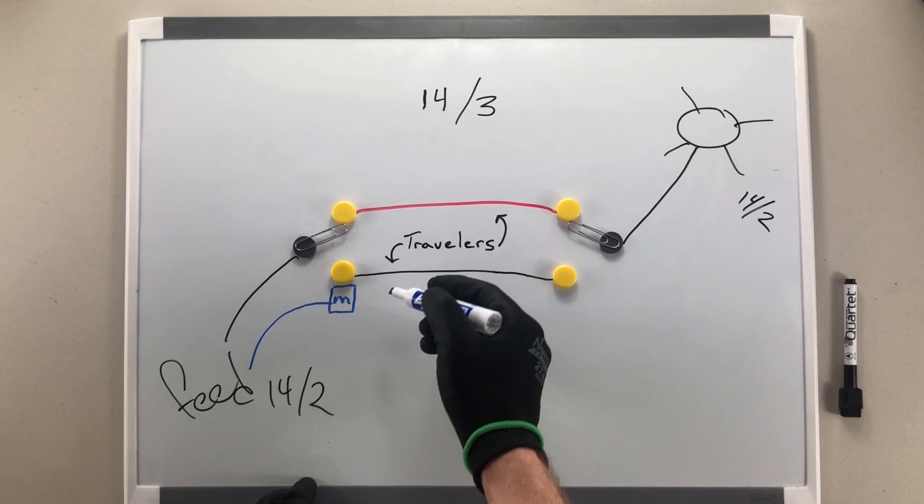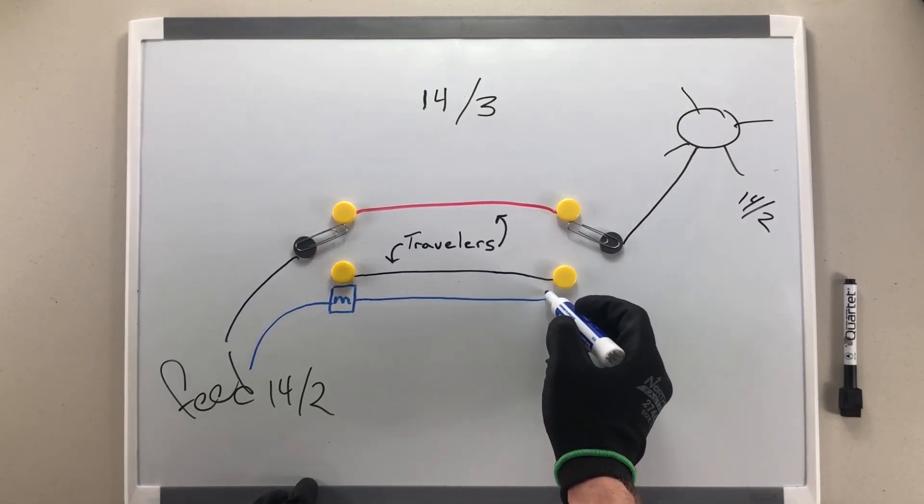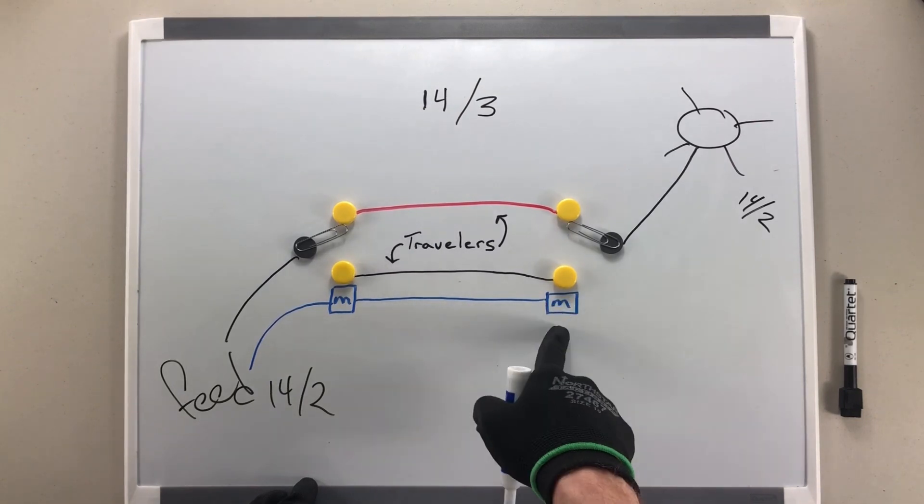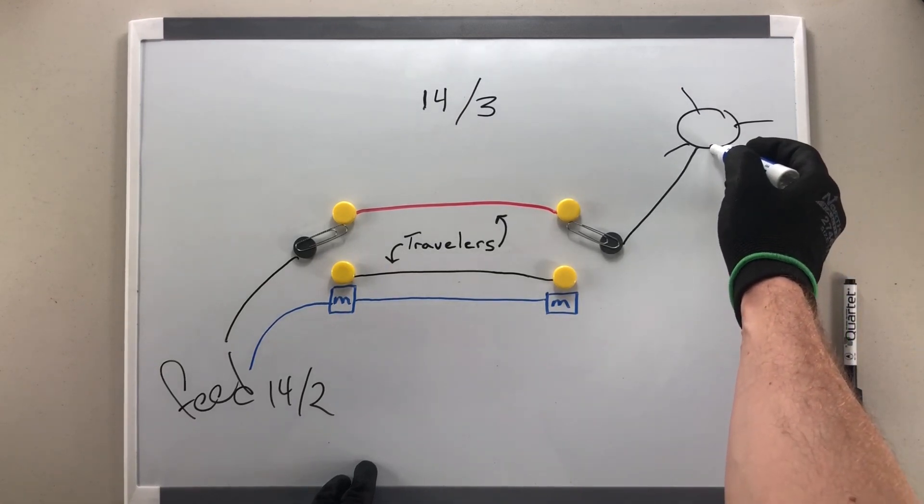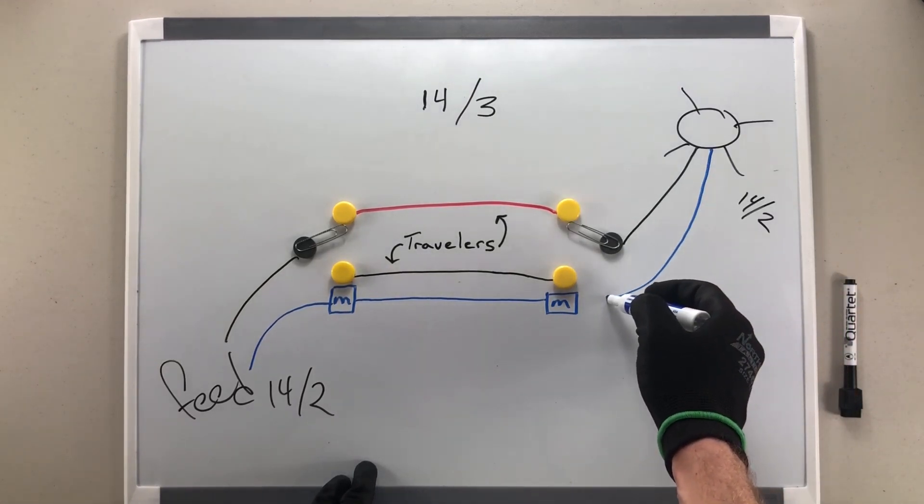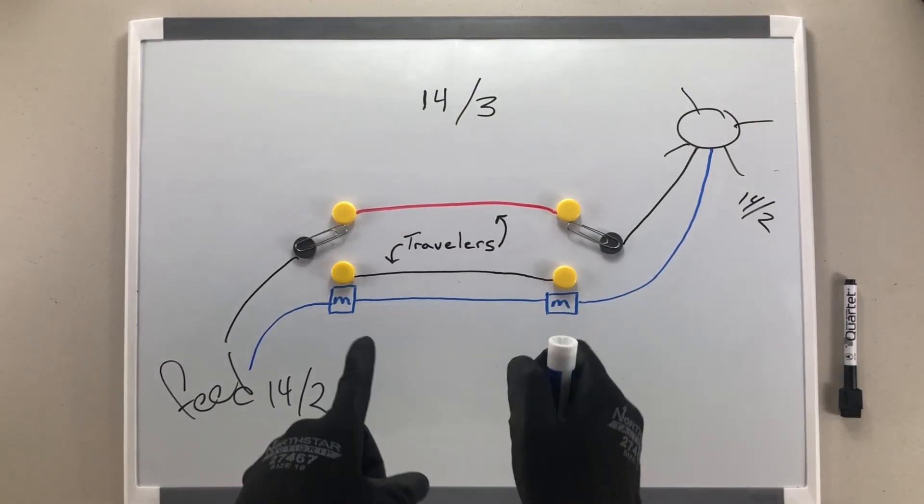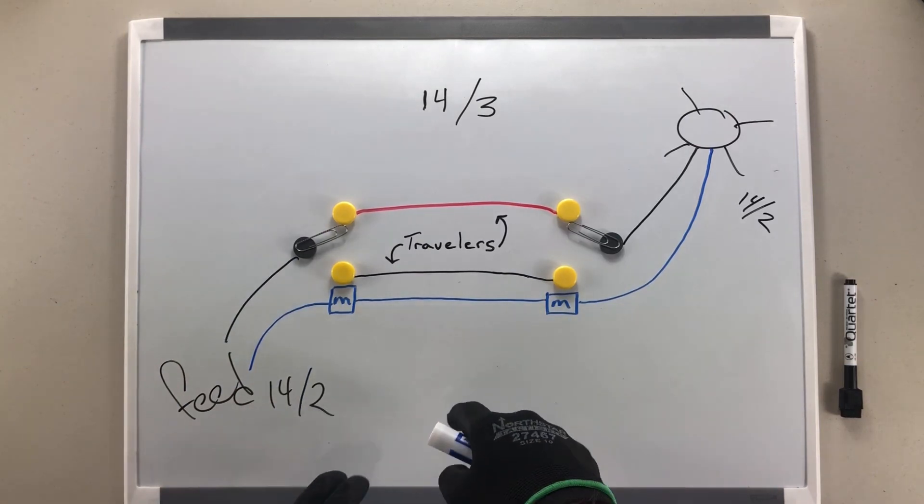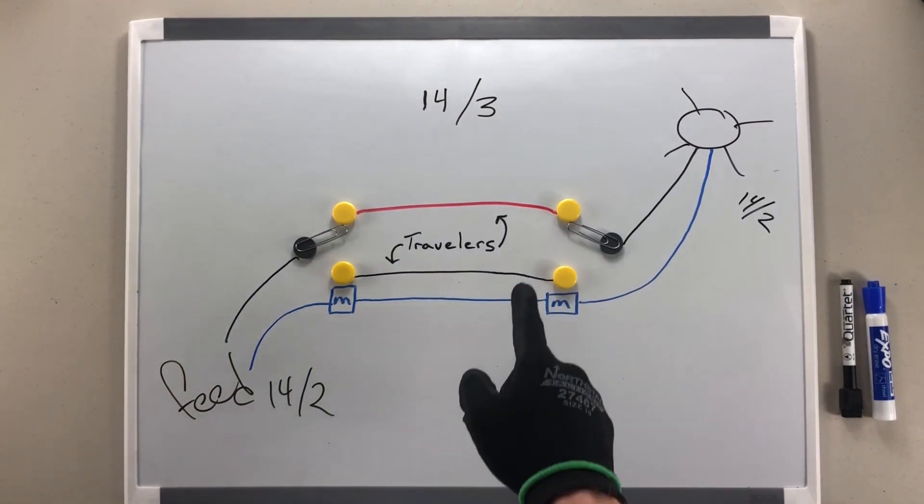We also have a neutral in our 14-3, so that will come across between our two 1104 boxes, and we'll make another wire nut connection here with our neutral. We also have a neutral in our 14-2 from our light, so that will come down and connect as well in the box with our three-way switch. None of our neutrals ever get connected to any of the switch terminals. Those are only for the current carrying conductors that we label as hot wires, like the red and the black.